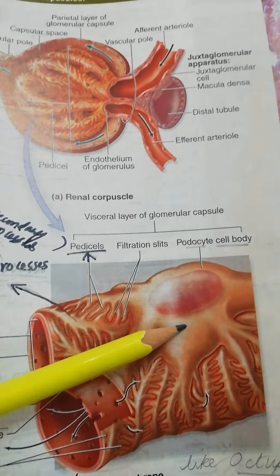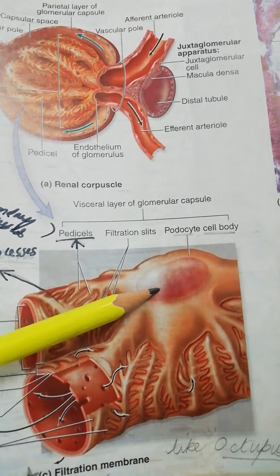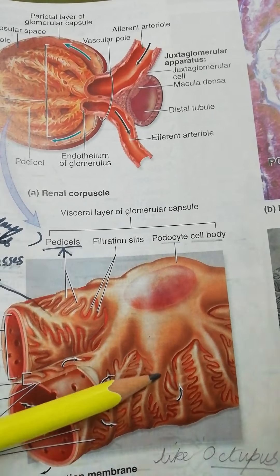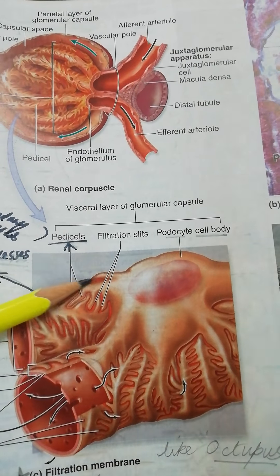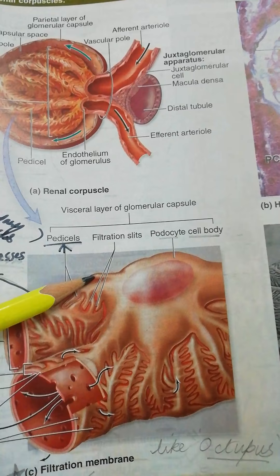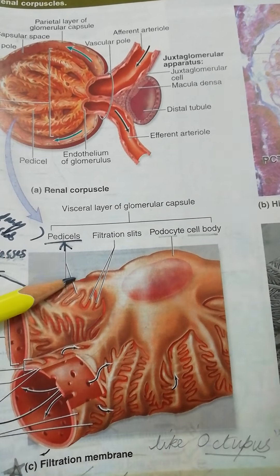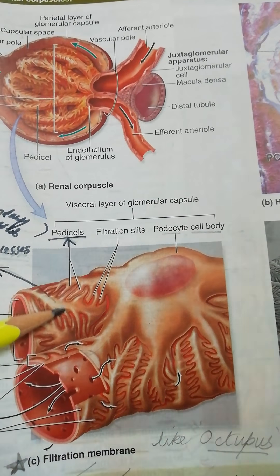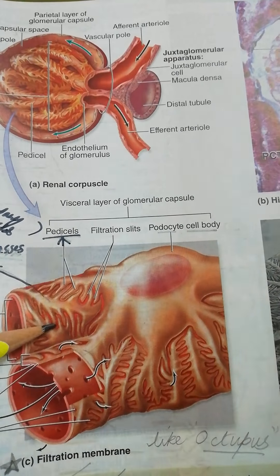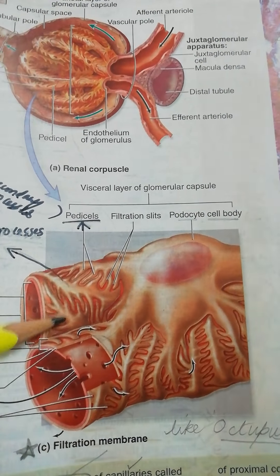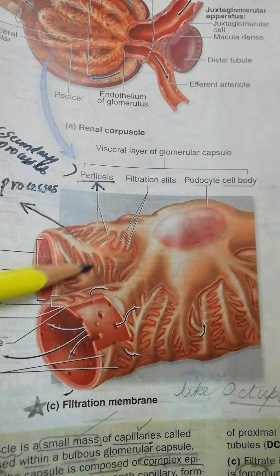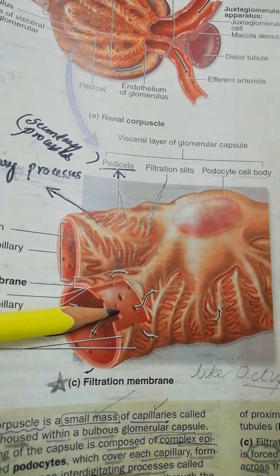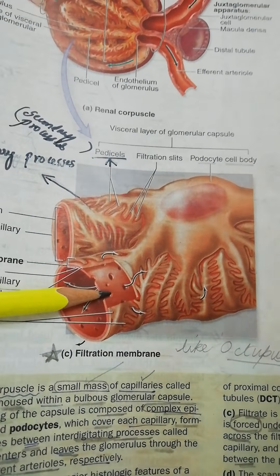Inside, the visceral layer has a special type of cells which look like an octopus — these are called podocytes. The cell body of the podocytes gives rise to primary processes like the tentacles of an octopus. Further, these primary processes give rise to secondary processes called pedicles, which interdigitate with each other, engulfing the underlying tuft of capillaries or glomerulus.